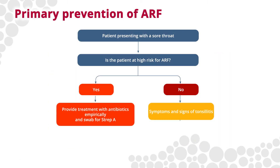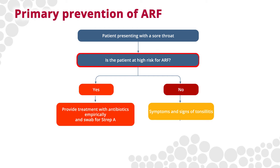Recommendations for primary prevention in Australia are based on a person's level of risk of ARF. Knowing which people need prompt treatment with antibiotics for throat and skin infections is an important learning point for health staff working with populations at high risk of ARF.